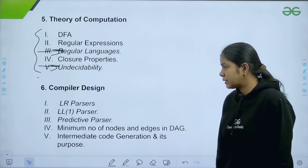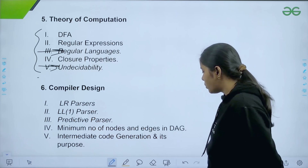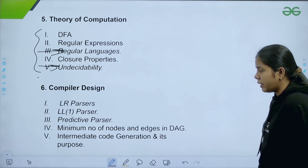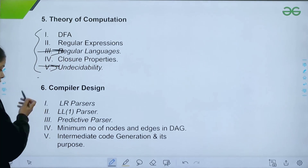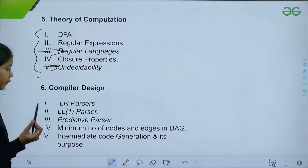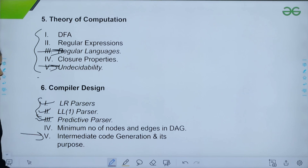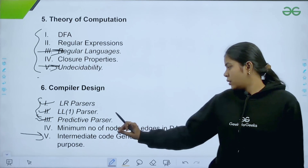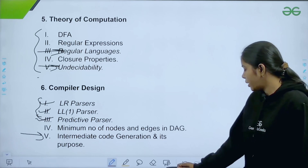The next subject is Compiler Design. Important topics here are LR parser, LL(1) parser, predictive parser, minimum number of nodes and edges in a DAG, and intermediate code generation and its purpose. These five topics are very important. Among them, intermediate code generation is a topic where questions are relatively simple — once you go through it, you can easily solve GATE questions.